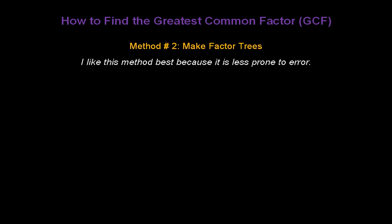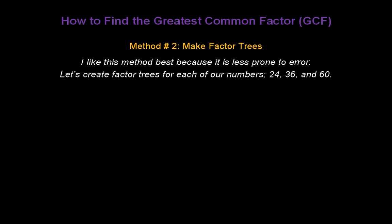The second method I want to show you today is making factor trees. I like this method best because it's less prone to error. Let's go ahead and create factor trees for each of our numbers 24, 36, and 60. I can break 24 down into 6 times 4. I know 6 breaks down into 2 times 3, and 4 breaks down into 2 times 2. I'm done factoring 24 because all the numbers at the bottom of my tree are prime numbers.